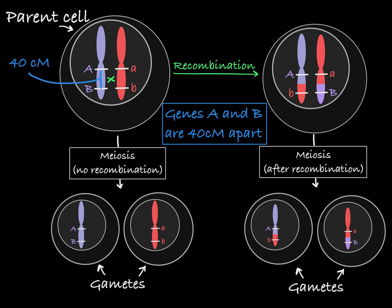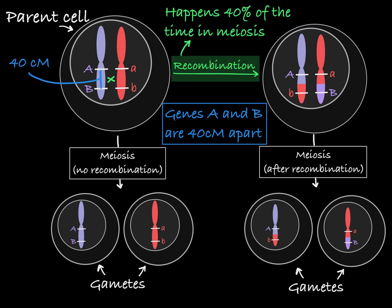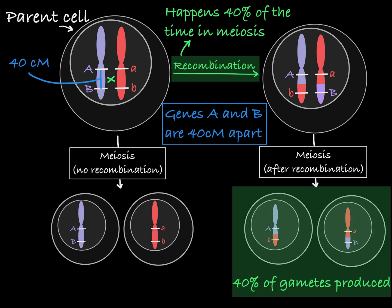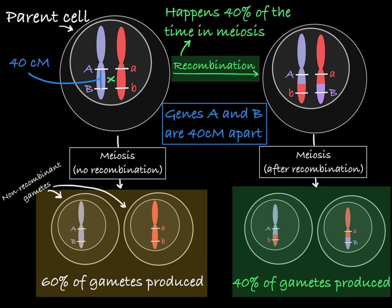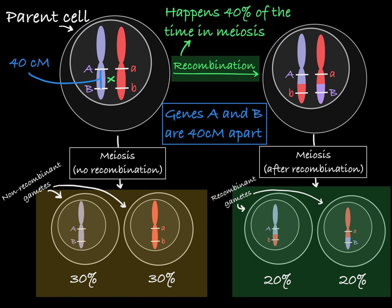Now, if these genes are 40 centimorgans apart, then we'd expect recombination to occur 40% of the time, and therefore 40% of your gametes produced will be recombinant, while the remaining 60% will be non-recombinant. You can break this down further: each non-recombinant gamete will be produced 30% of the time, and each recombinant gamete will be produced 20% of the time.